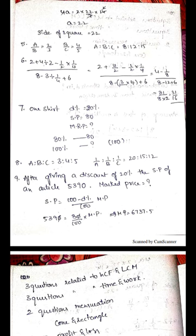Next is a BODMAS simplification: 2 plus 4 divided by 2 minus 1/2 times 1/4 by 8 minus 3 divided by 1/4 plus 6. First do division, then multiplication, then addition, then subtraction.